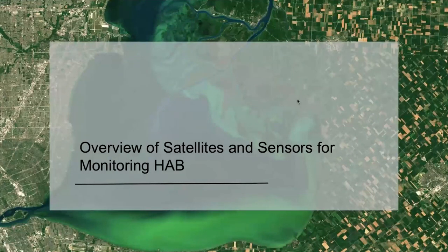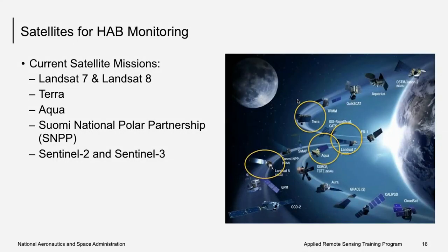We'll overview satellites and sensors useful for monitoring HABs and how to access this data. If you've already used any of this satellite data, please type in the chat box. If you're new to remote sensing, this will provide a series of satellite and sensor information as well as tool information. If you've already used this data, this presentation serves as a comprehensive reference catalog of all satellite sensors and tools you can use.